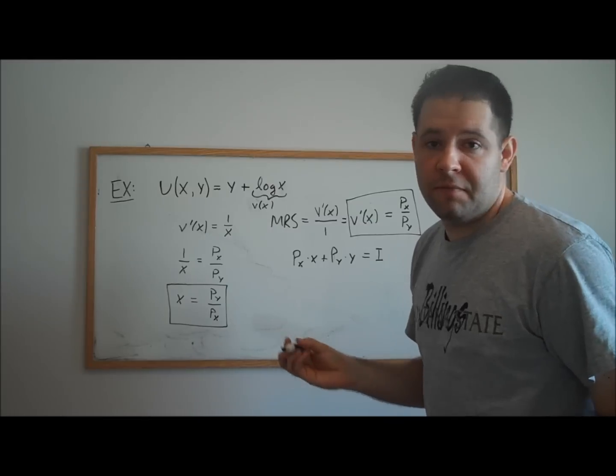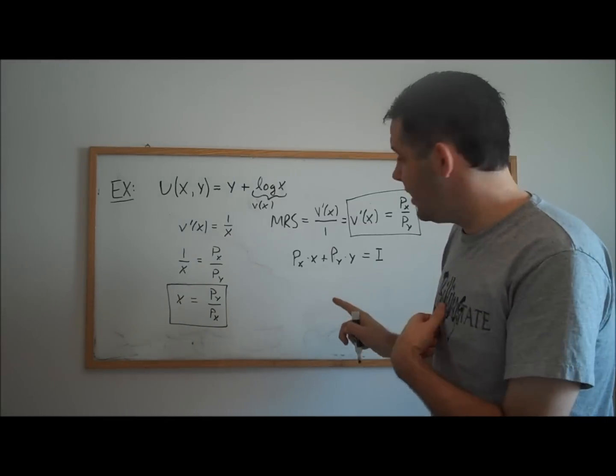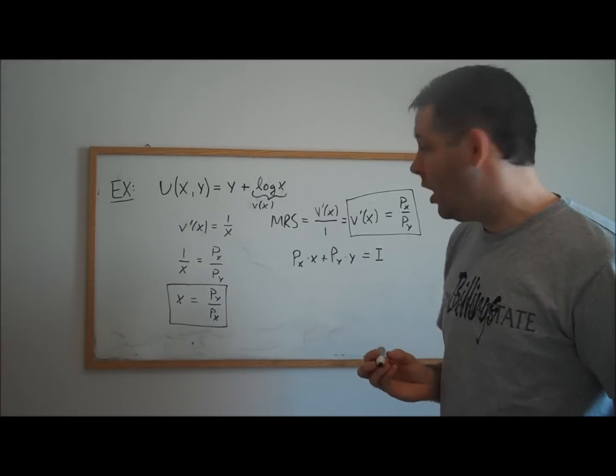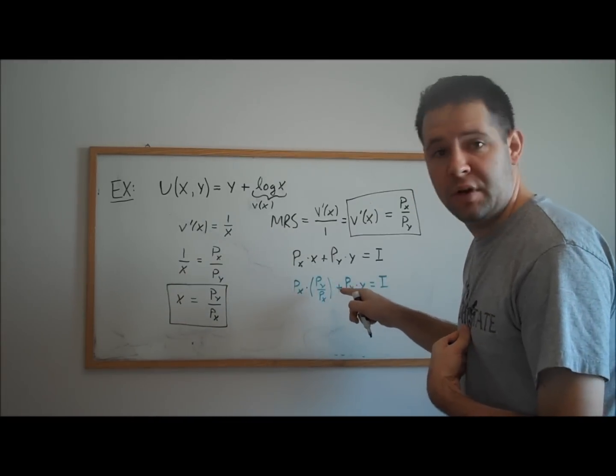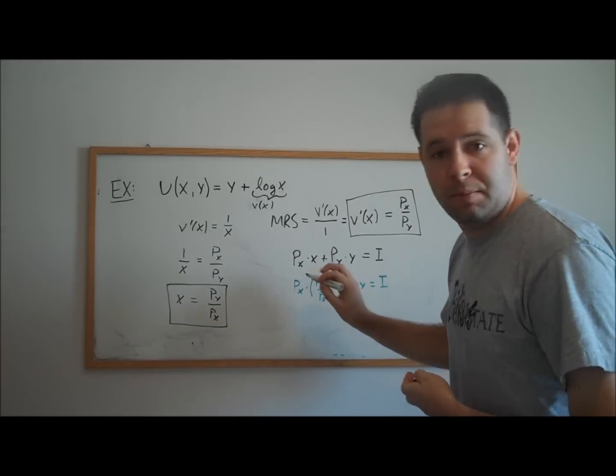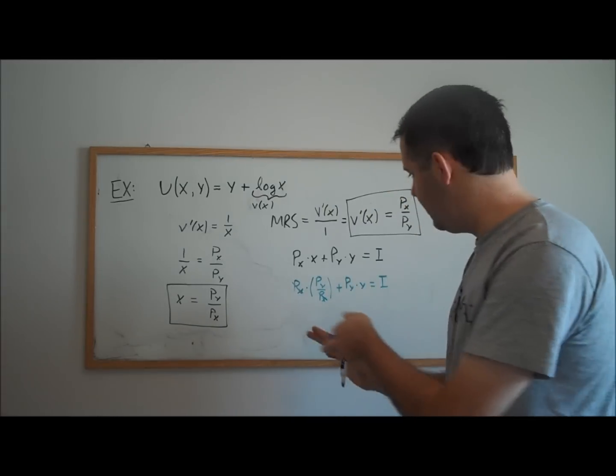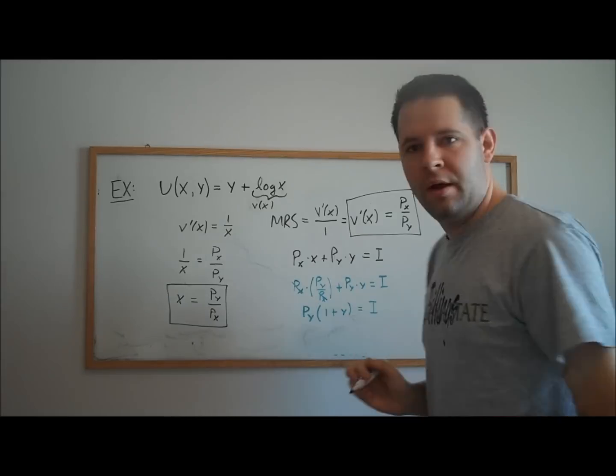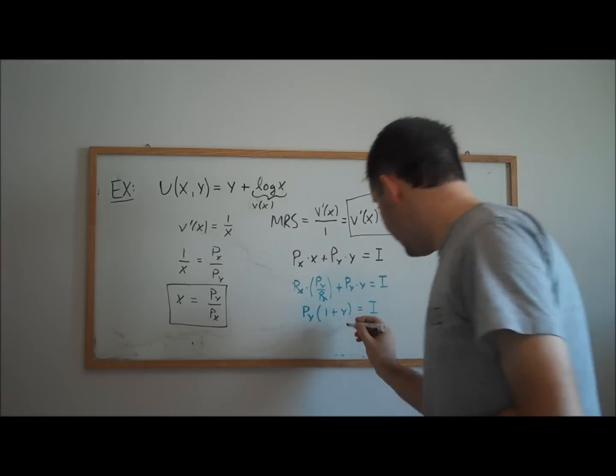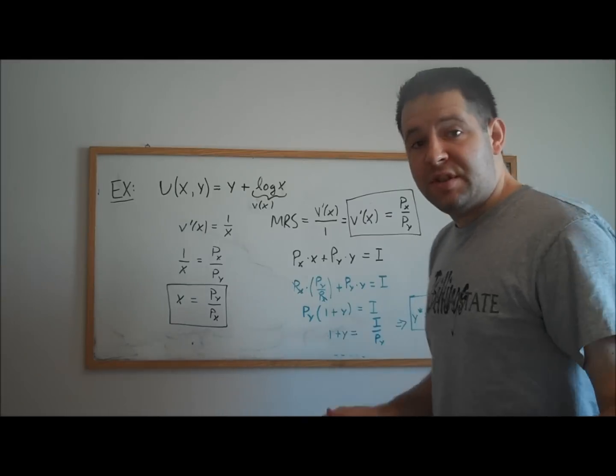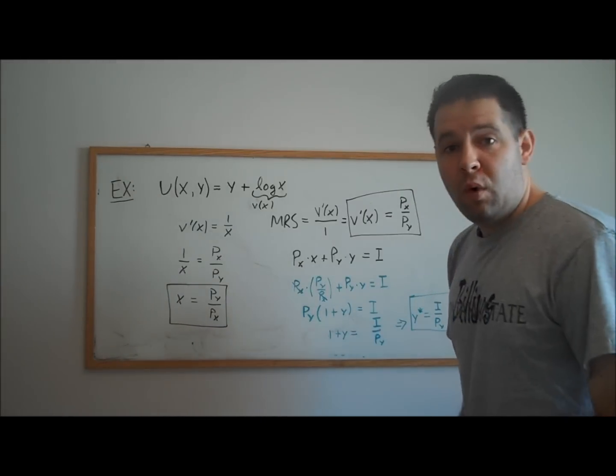Now what's our demand curve for good y? We can just plug into our budget constraint and solve for y. We get that by plugging the demand in for good x. And now we can cancel the px's. We can factor out the py on this left-hand side. Now go ahead and divide through by py and isolate y. And so then there we've solved for the demand for good y.